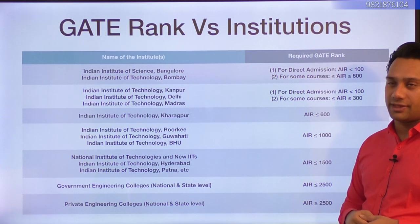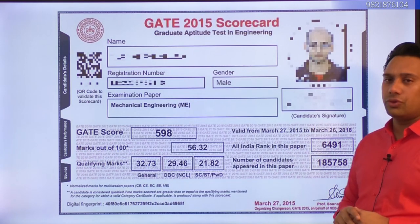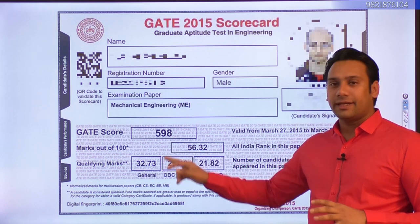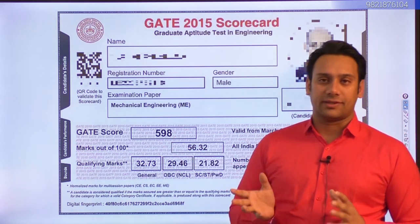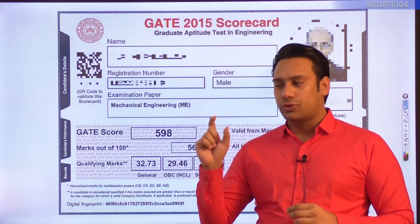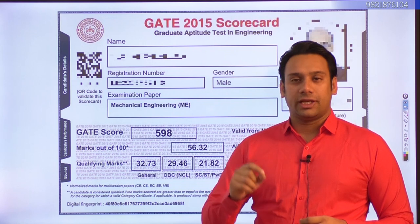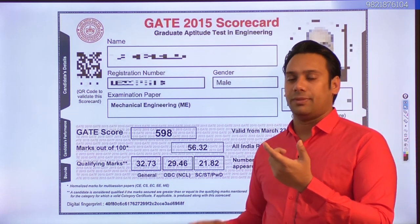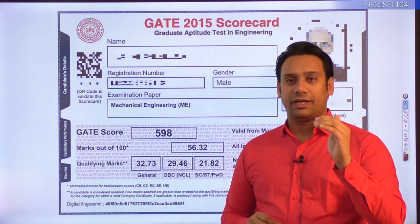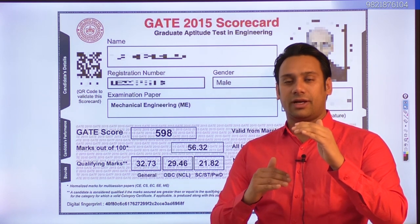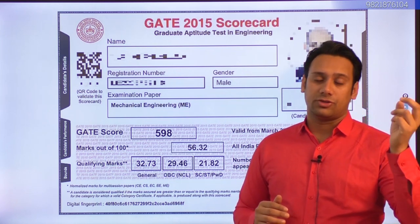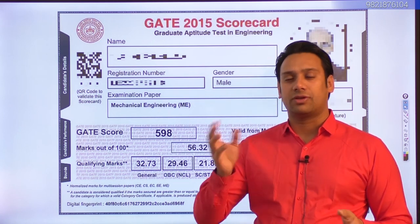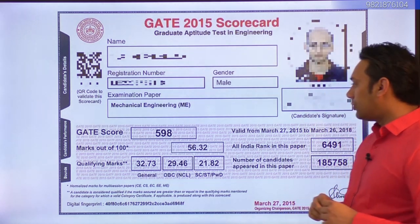Your GATE scorecard shows a GATE score determined by a relative marking scheme. If All India Rank 1 scored 88 marks, they get a GATE score of 1,000, and all others are evaluated relative to that. So if rank 1 has a score of 1,000, rank 2 who scored 86 marks will have approximately 900 to 800 as their GATE score.